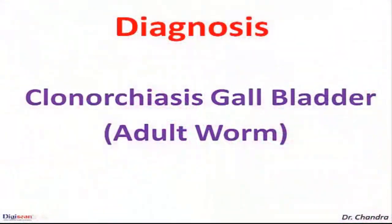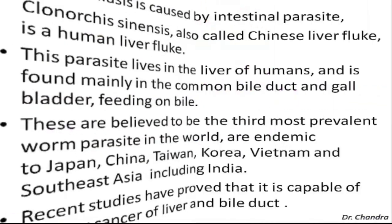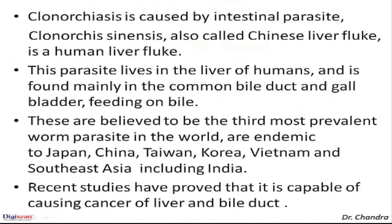Upon reading the literature, a diagnosis of clonorchiasis of the gallbladder was made, with presence of an adult worm in the lumen. Clonorchiasis is caused by the intestinal parasite Clonorchis sinensis.